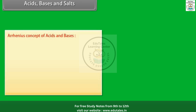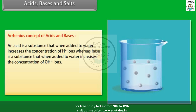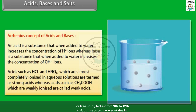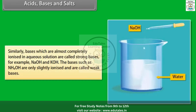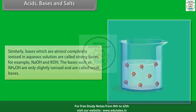Arrhenius concept of acids and bases: An acid is a substance that, when added to water, increases the concentration of H⁺ ions, whereas a base is a substance that increases the concentration of OH⁻ ions. Acids such as HCl and HNO₃, which are almost completely ionized in aqueous solution, are termed strong acids. Acids such as CH₃COOH, which are weakly ionized, are called weak acids. Bases which are almost completely ionized are called strong bases, for example NaOH and KOH. Bases such as NH₄OH are only slightly ionized and are called weak bases.